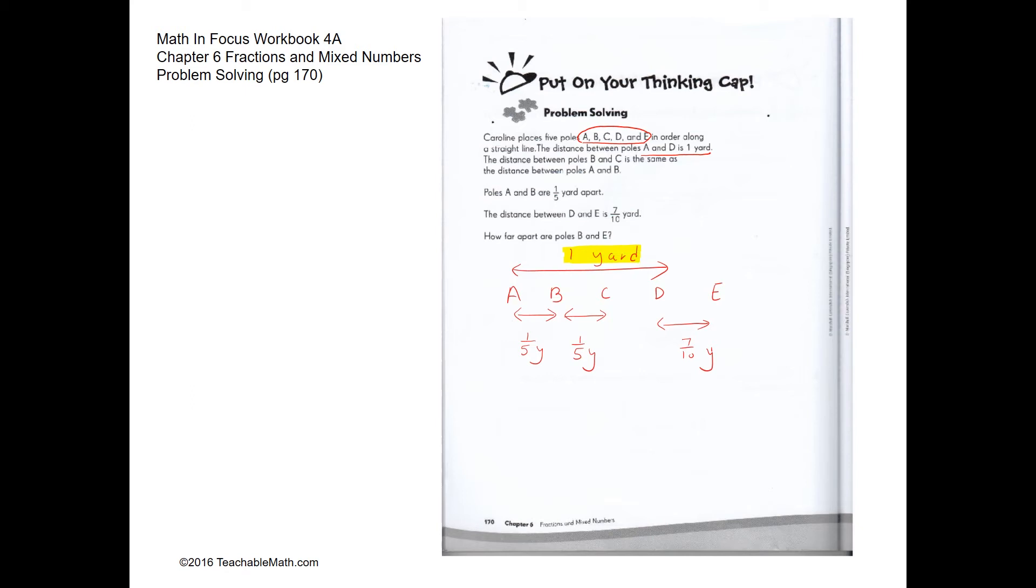The distance between B and C is the same as the distance between A and B. So the distance between A and B is the same as the distance between B and C. Poles A and B are one-fifth yard apart. So this is one-fifth yard. So this has to be one-fifth yard since it is the same distance.